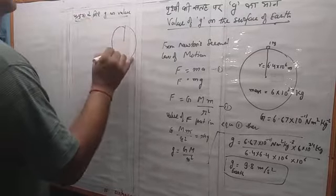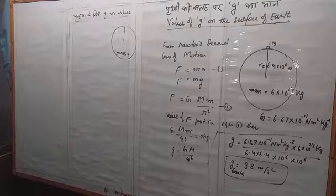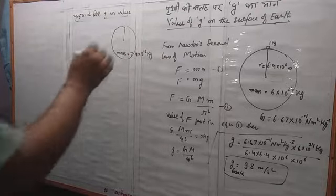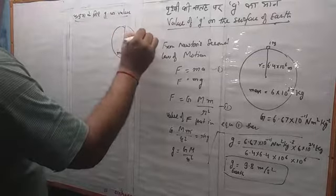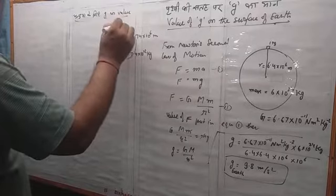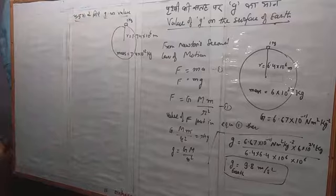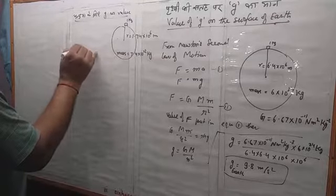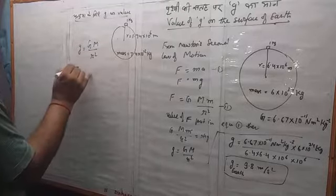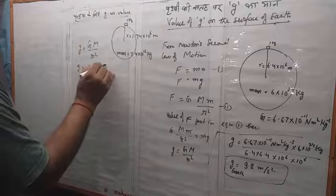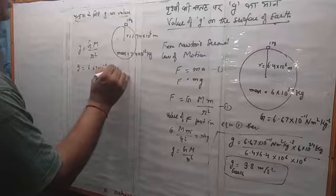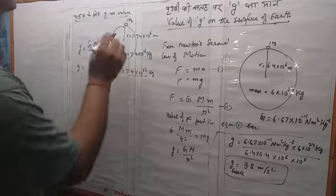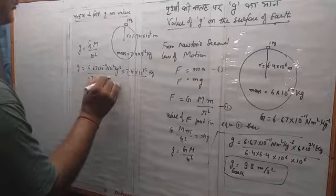For the Moon, the mass is 7.4 × 10²² kg and the radius is 1.74 × 10⁶ meters. Using the same formula g = G·M / R², we get g equals 6.67 × 10⁻¹¹ N·m²/kg² multiplied by 7.4 × 10²² kg, divided by (1.74 × 10⁶)².